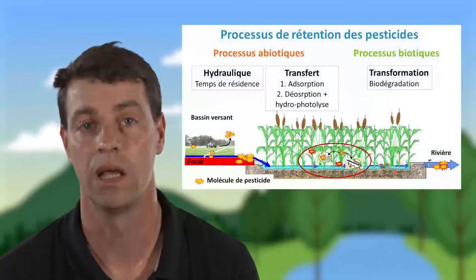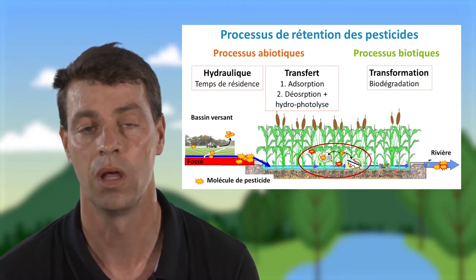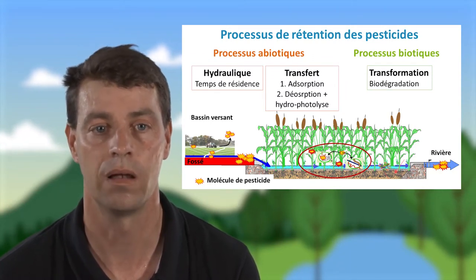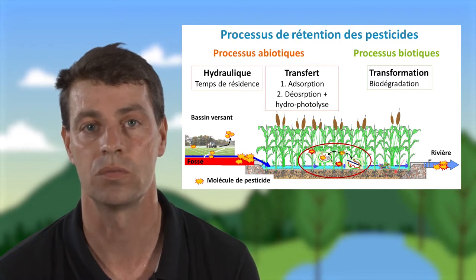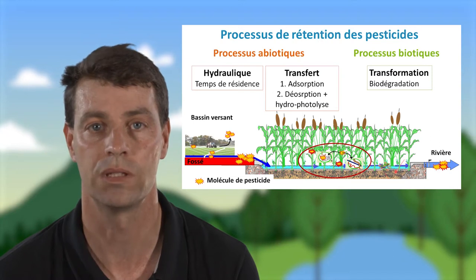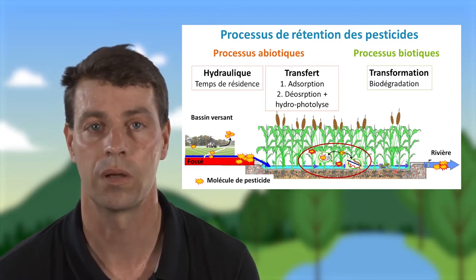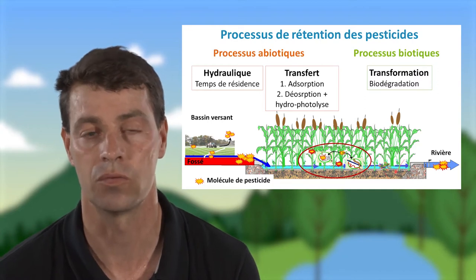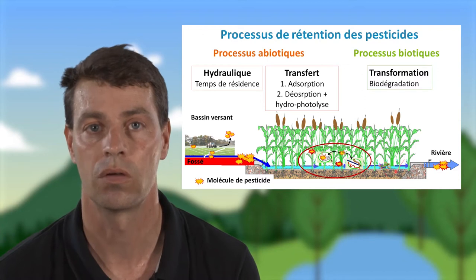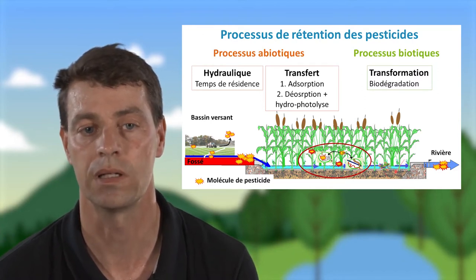Le cycle des pesticides est encore plus complexe du fait du grand nombre de pesticides utilisés par les agriculteurs. Le temps de résidence est aussi un facteur principal, mais nous avons aussi les processus biotiques, que sont la dégradation par les micro-organismes, et les processus abiotiques, que sont les processus physiques et chimiques. En termes de processus physiques, nous avons l'adsorption, qui est le principal processus permettant de stocker 10 à 50 % des pesticides interceptés.